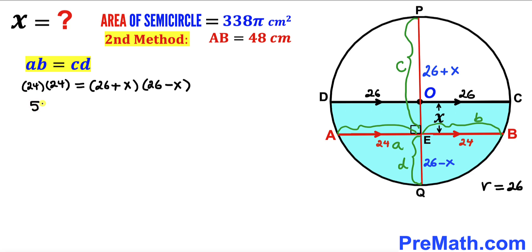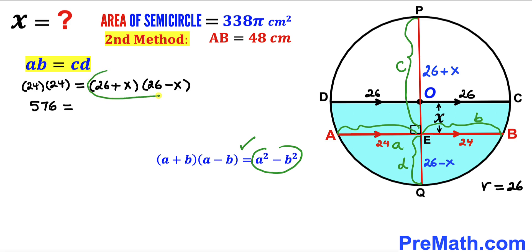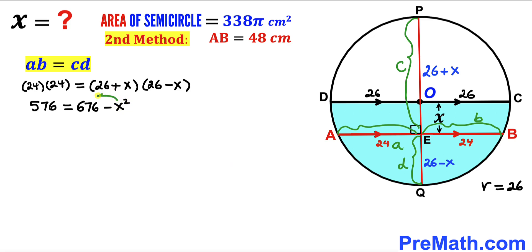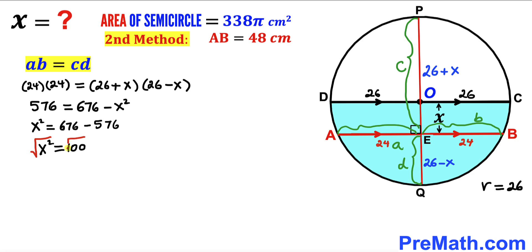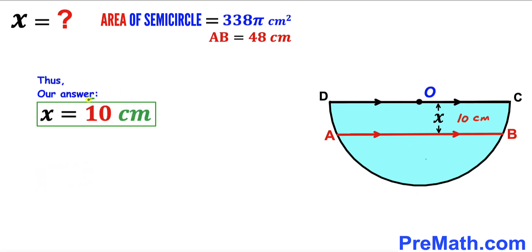On the left side, 24 × 24 = 576. On the right side, applying the identity (a + b)(a − b) = a² − b², we get 26² − x² = 676 − x². So 576 = 676 − x². Rearranging, x² = 676 − 576 = 100. Taking the square root, x = 10 cm.